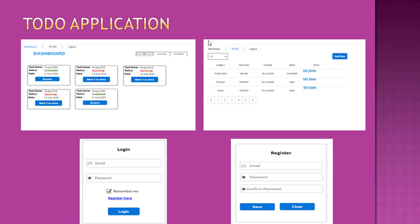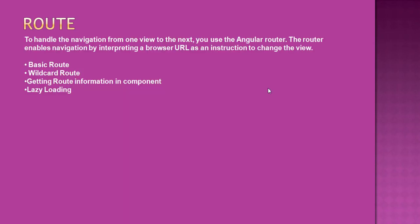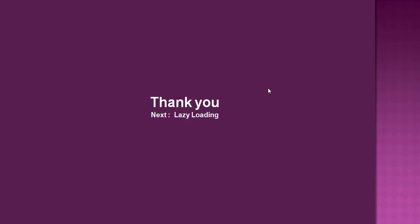We didn't yet add routing for the children of Home — Dashboard and To-Do. We are going to cover that in the next video when we study lazy loading. We will also add a wildcard route component and see how to add the redirectTo property to our routes. That's all for this video — thank you for watching.